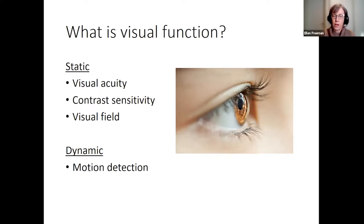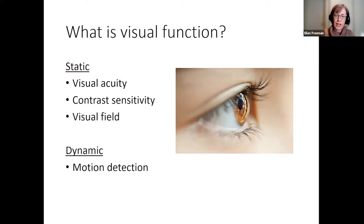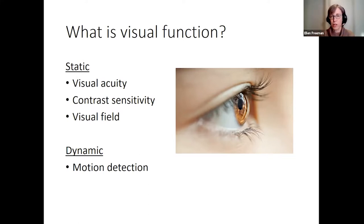Contrast sensitivity is another measure of visual function — how well people see at lower levels of contrast, measured using a chart with letters that get lighter but stay the same size. Visual field measures how widely you can see when focusing on one point. These are static measures. Dynamic measures include motion detection, assessed by viewing moving dots on a screen and indicating direction, with each trial making the movement progressively harder to detect.